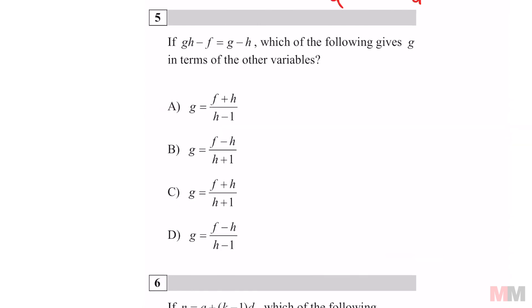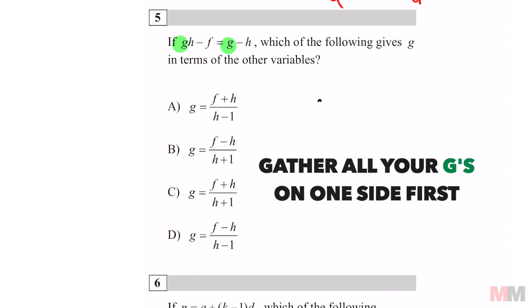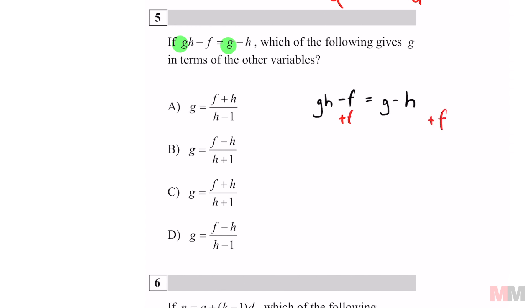This one's similar to question number three. If you look at your formula in the beginning, your G's are split up. And that is the letter that we're trying to solve for. So you want to gather up all your G's on one side. I can get rid of that F by adding an F and try to do two things at the same time.